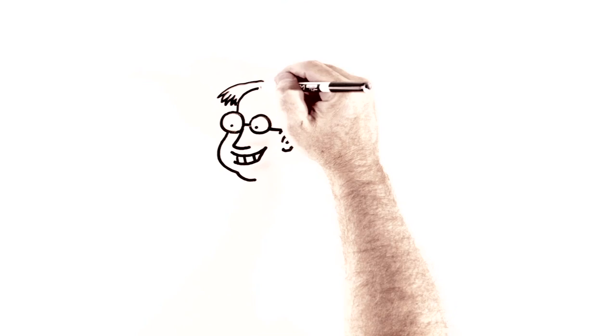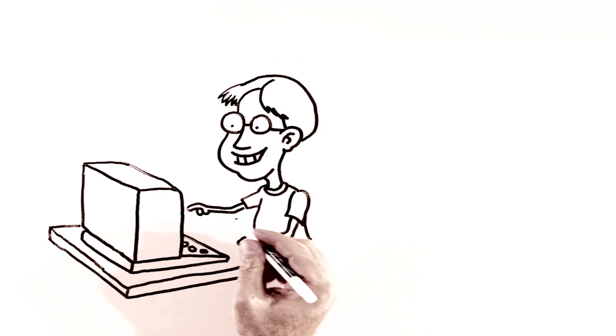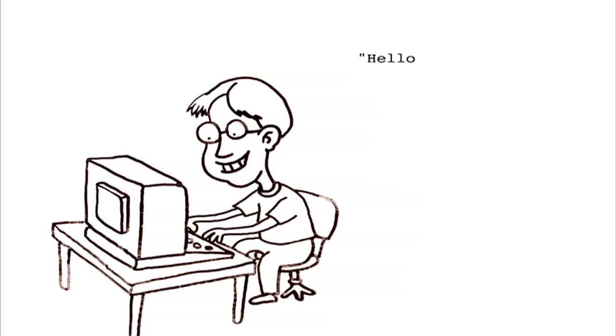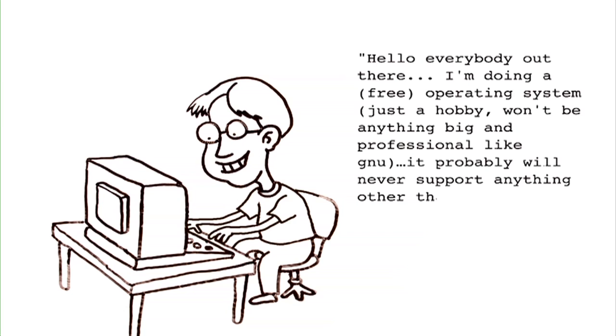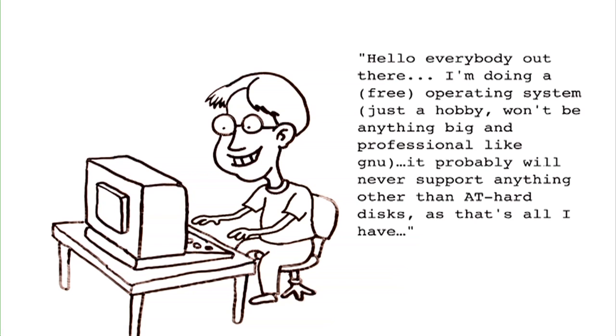It was August of 1991, and a 20-year-old computer science student named Linus Torvalds sat down at his computer in Helsinki to post what is now one of the most famous entries in computing history. Hello, everybody out there. I'm doing a free operating system. Just a hobby. Won't be anything big and professional like GNU. It probably will never support anything other than AT hard disks, as that's all I have.